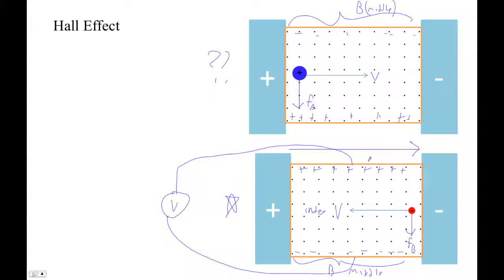Positive on the left, positive on the left, negative on the right, negative on the right. And we've got magnetic field out of the page. But the two different scenarios, positive charge carriers and negative charge carriers lead to different charge distributions.